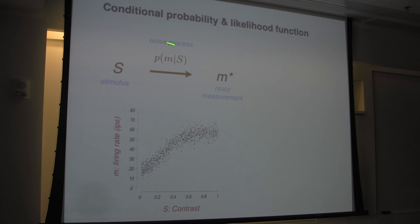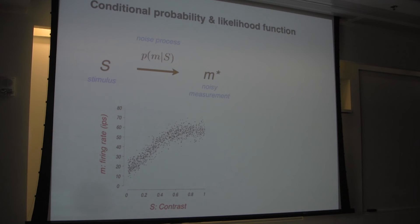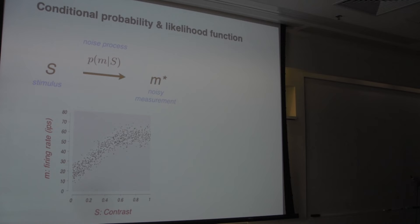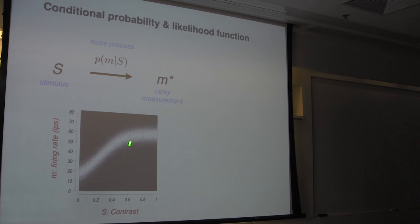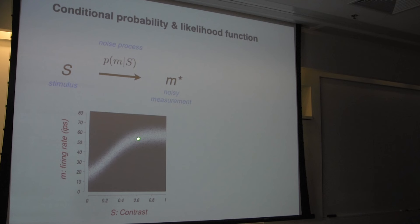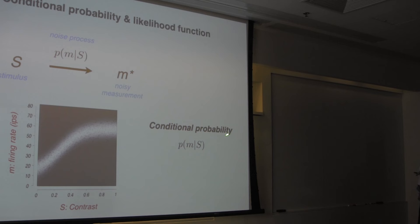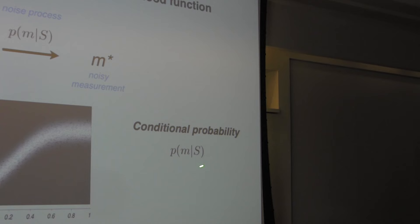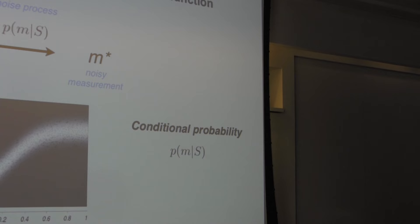So the stimulus goes into some noisy measurement and a noisy measurement comes out. This M corresponds to one of these numbers on a given trial for that neuron. We can build this into a cartoonish model that allows us, whenever I give the stimulus, to make an inference about what the possible responses of that neuron might be. The first concept I want to share — which many of you know — is called conditional probability. The conditional probability characterizes the distribution of measurements for a given stimulus.